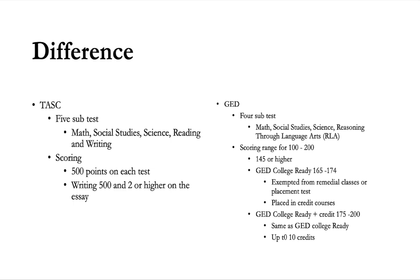If your GED scores are between 175 and 200, they call that GED College Ready Plus Credit. Again, you could be exempted from remedial classes or placement tests, you could be placed in credit courses, and they also give you up to 10 credits. But again, it depends on the college or program.